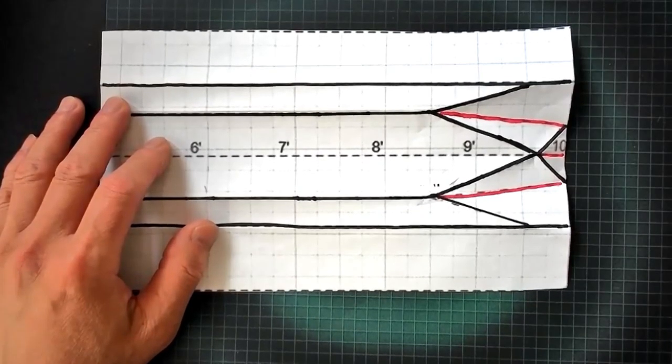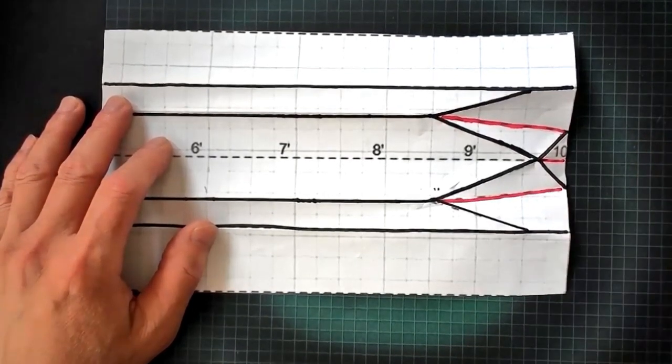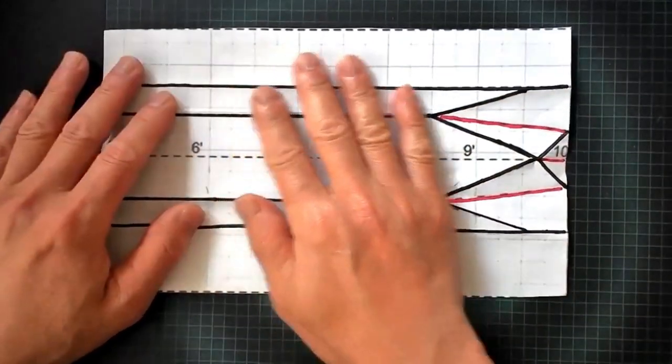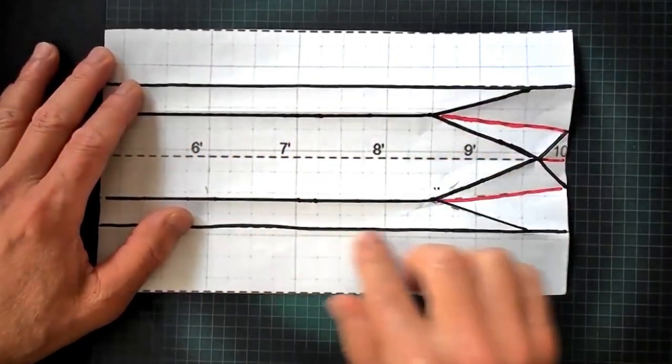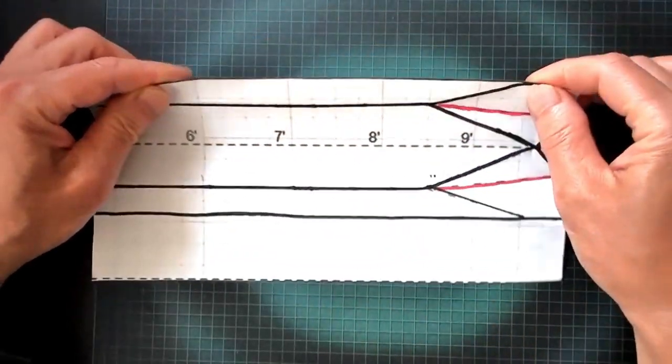It is very easy to fold into the shape of a pontoon. The black lines are folded in one direction and the red lines are folded in the other direction as illustrated here. The height of this pontoon is four inches.